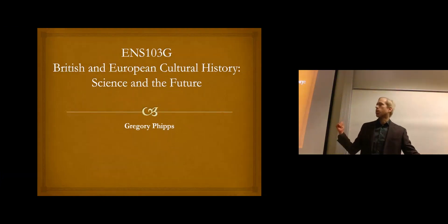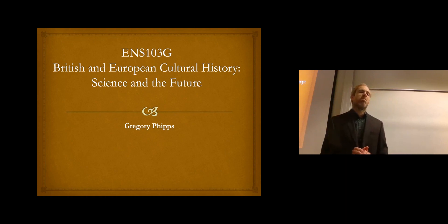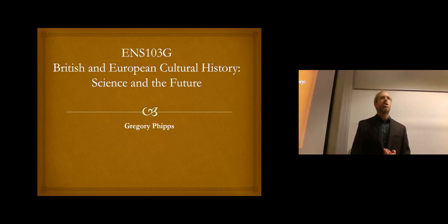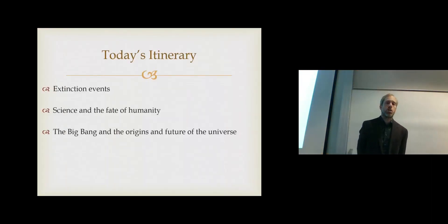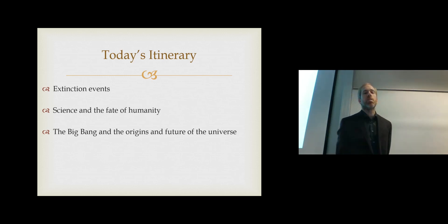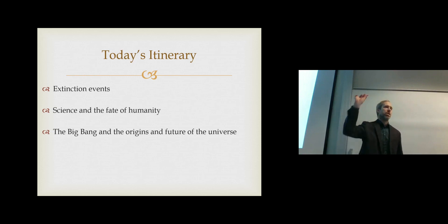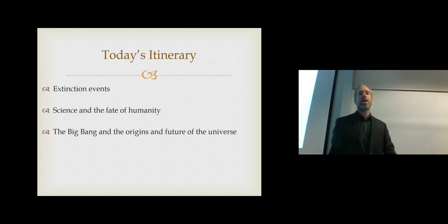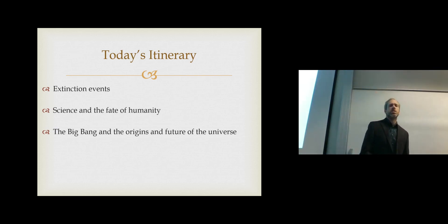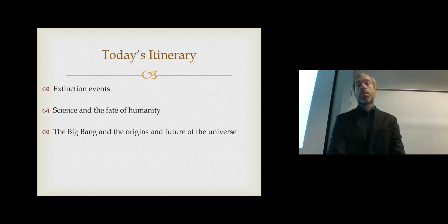Moving on to our final topic, linking to science. The itinerary covers: extinction events, science and the fate of humanity, the Big Bang and the origins and future of the universe. The material in this class has already been broad — dealing with British, European, and global cultural history — and here we're getting even broader, to what you might call cosmic cultural history. Since we've been talking about the origins of humanity and things that will happen in the future, it's important to pause and think about our place in the grand scheme of everything.